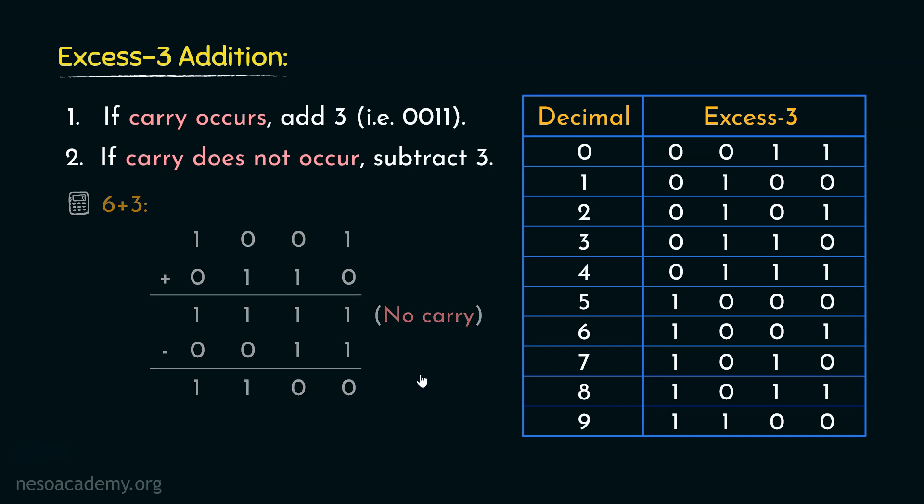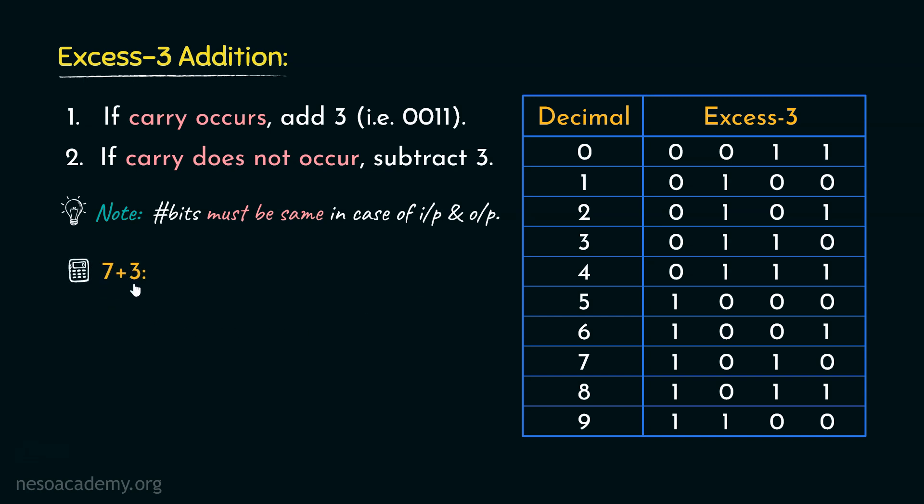Now, let me tell you an important note regarding the XS3 addition. That is, the number of bits must be same in case of both input and output. What I am trying to mean by this is, say we are trying to calculate 7 plus 3. Now, 7 plus 3 is actually 10. Observe, we added two one digit numbers and we ended up obtaining a two digit value in the result. Now, for the XS3 adder, obtaining this particular output from these inputs will be impossible. So, for that, we need to modify our input bits as well. So, 7 will become 07 and 3 will become 03 in order to obtain this two digit result 10.